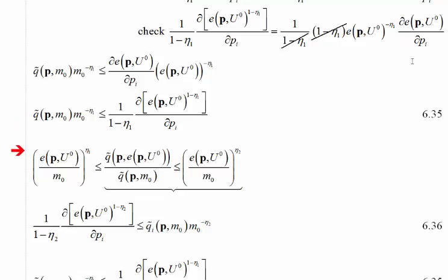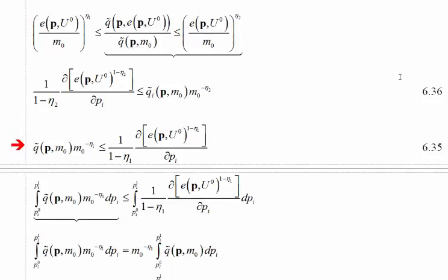That takes care of the first two parts of the inequality expression. Now we focus on the second part, going through exactly the same process and again using the differential equation trick from above. Popping back up to the first two sides of that inequality: on the left-hand side we have the Marshallian demand, and on the right-hand side we have the expression 1 over (1 minus eta1) times the derivative of the expenditure function to the (1 minus eta1) with respect to pi.